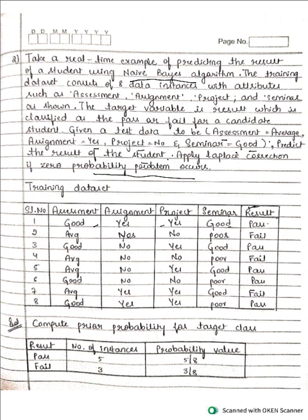We have 5 pass instances and 3 fail instances (8 minus 5). The probability of pass is 5 by 8, and we write the probability of fail as 3 by 8. This is the first step — computing the prior probability for the target class. Similarly, for all attributes we have to compute the prior probability as well.